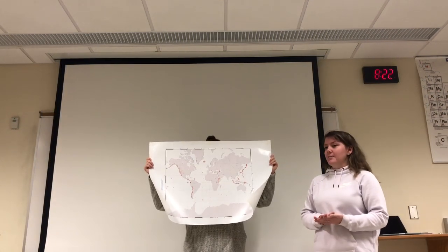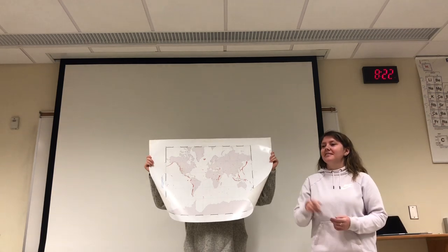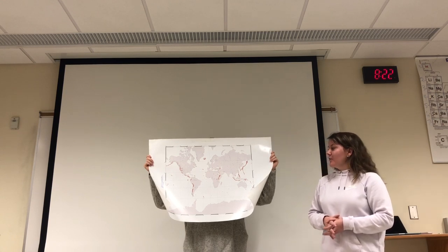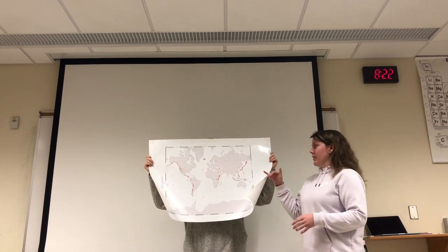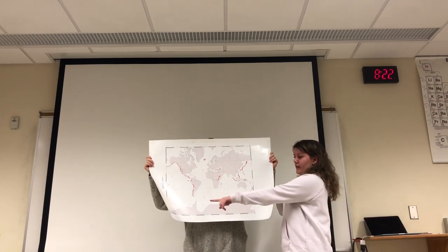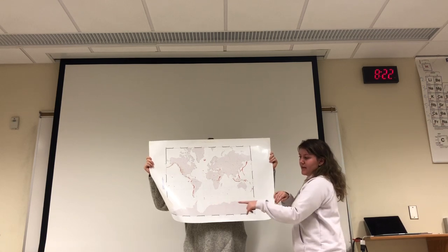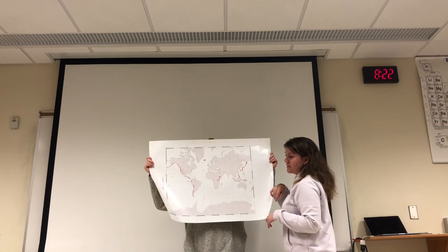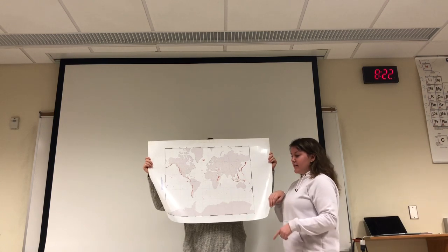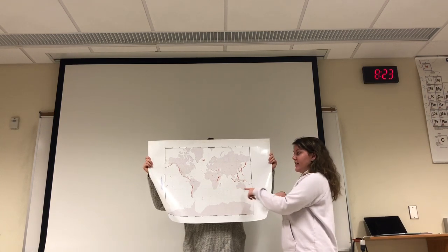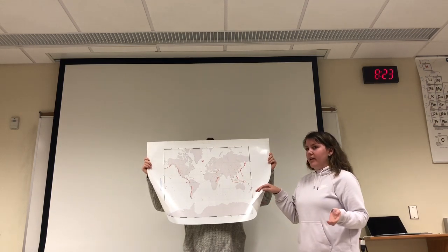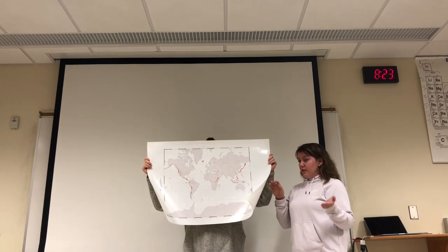Next we're going to be talking about volcanoes. A student asks: 'Miss Stephanie, what do the red dots represent?' The red dots represent the different places where volcanoes are in the world. On the side it says the red dots indicate currently or historically active volcanoes. Some spots on the map have one or two dots while others have a whole bunch, and those usually fall on the fault lines of plate tectonics.